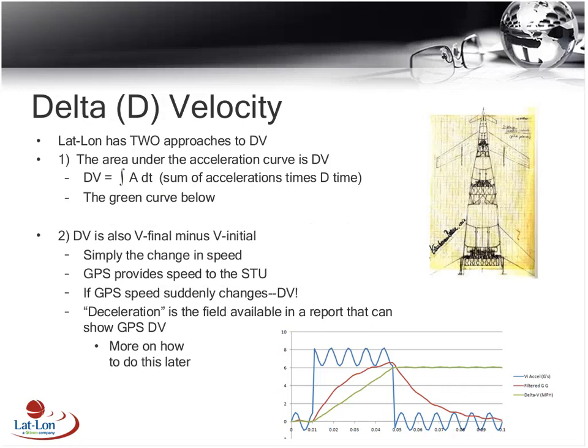When you look at the area under an acceleration curve, that area is proportional to the change in speed. The green curve in the plot is delta velocity — how much speed the vehicle is accumulating based on the incurring acceleration. By integrating the area under the accelerometer plot, you can get the change of speed that occurred in the impact.